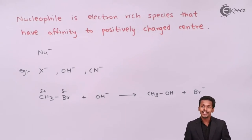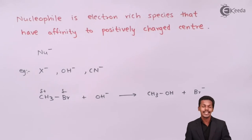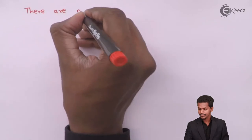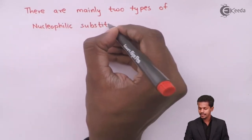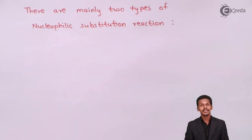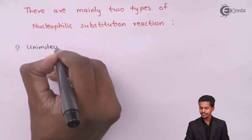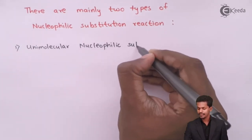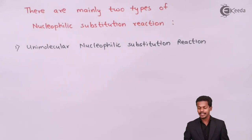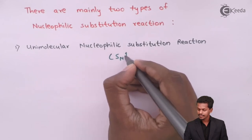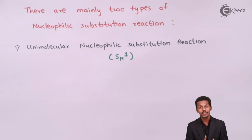The nucleophilic substitution reaction is divided into two parts. In future lectures we will cover the mechanism of each type, but let me give a glimpse of how many types we are going to study. There are basically two main types. The first one is the unimolecular nucleophilic substitution reaction, denoted as SN1 — also called nucleophilic substitution unimolecular reaction.